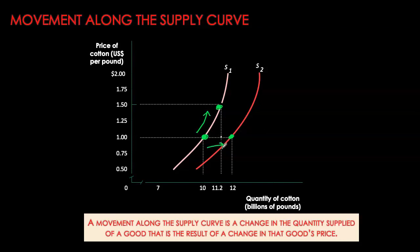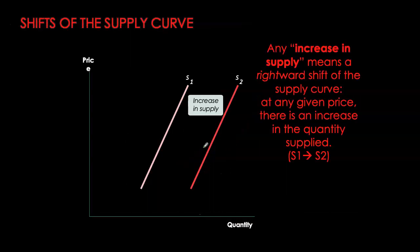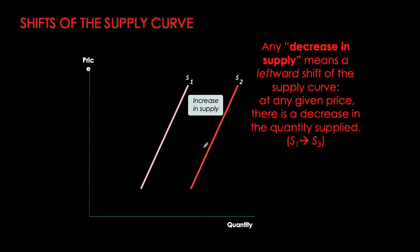It's important to understand the difference between movement along the supply curve versus a shift of the supply curve. When the price of cotton changes, it's a movement along the supply curve — all other factors are held constant and the curve already captures this positive relationship, so as price increases we move from point A to point B. However, if something other than price — in our case, improved technology — causes quantity supplied to increase at any given price, that shifts the entire supply curve.